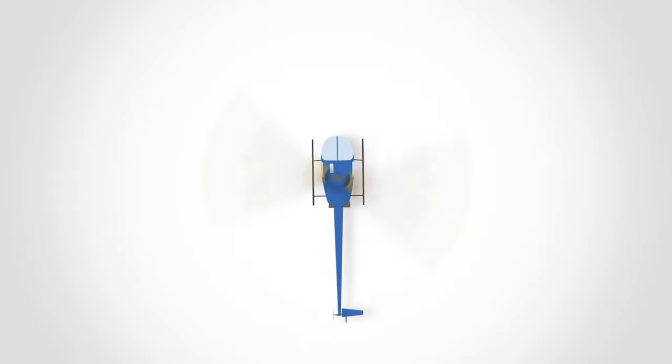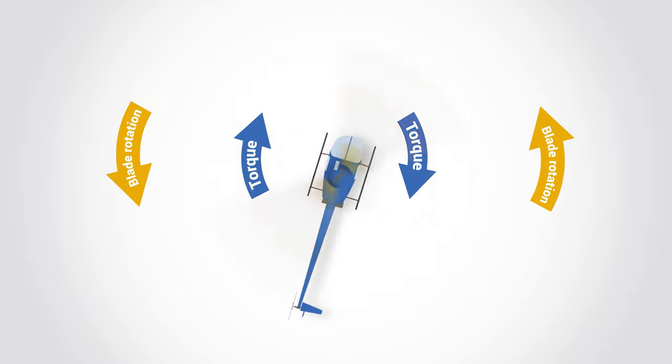With a single main rotor helicopter, torque effect is created as the engine turns the rotor. This torque causes the body of the helicopter to turn in the opposite direction of the rotor. This is Newton's third law in action.